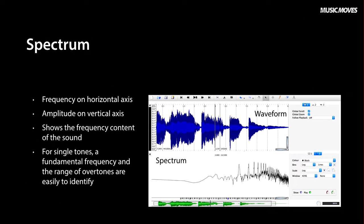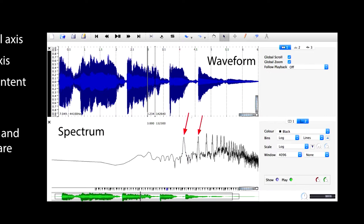This figure shows the waveform on top and the spectrum of a short part of the sound on the bottom. With frequency on the horizontal axis and amplitude on the vertical axis, we get information on the frequency content of the sound. For a single tone, the fundamental frequency and the range of overtones are easy to identify.